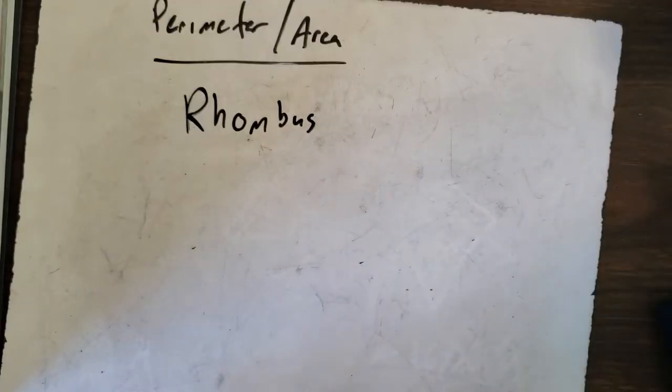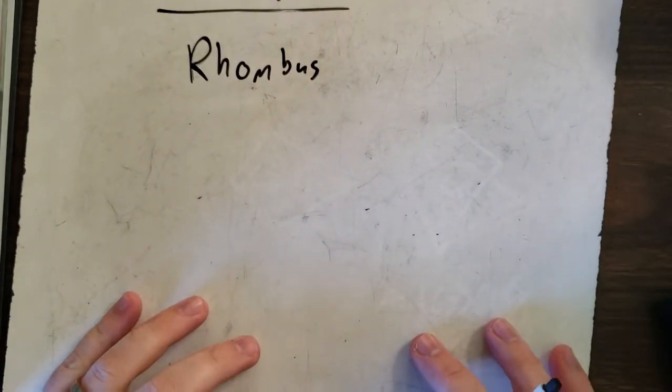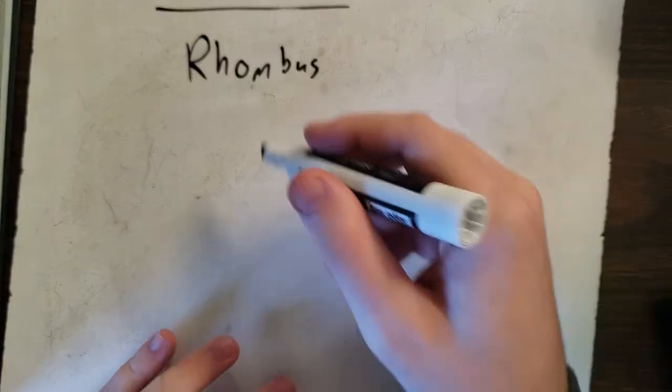Our next shape is a rhombus. A rhombus is a tilted square, so it looks like this.